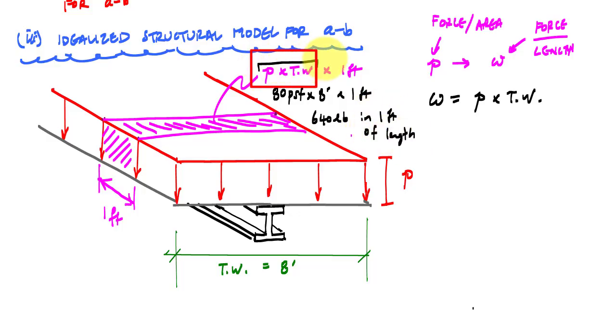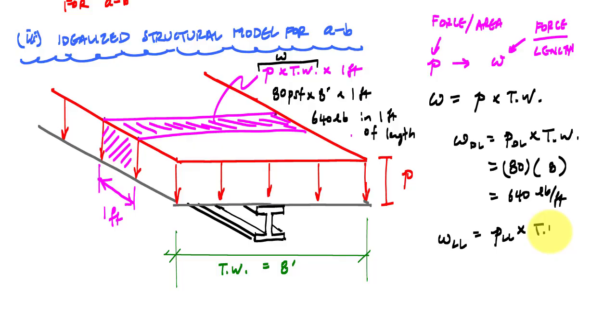In the case of, let's say, the dead load, this would be 80 PSF times eight feet times one foot, and that would tell me there's 640 pounds in one foot of length. This portion of this calculation is my distributed load here. The distributed dead load is the dead load pressure times the tributary width, 80 times eight feet, and that's going to be 640 pounds per foot. The live load is the live load pressure times the tributary width, 50 times 8, which is 400 pounds per foot.